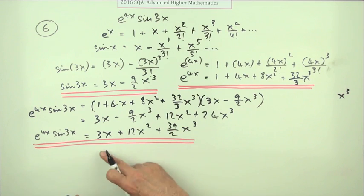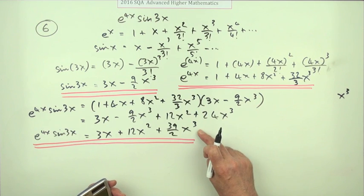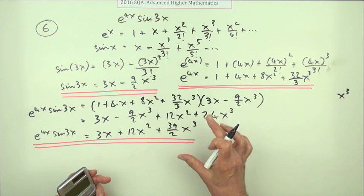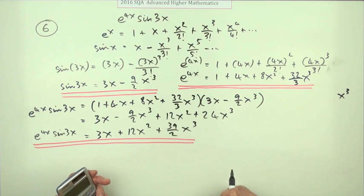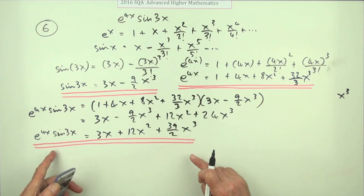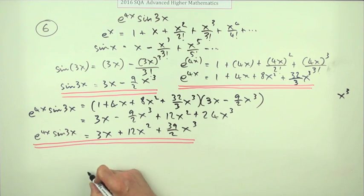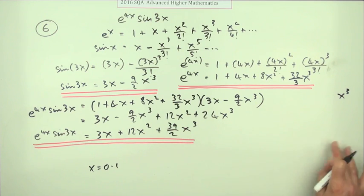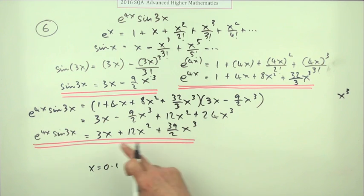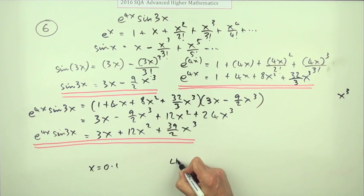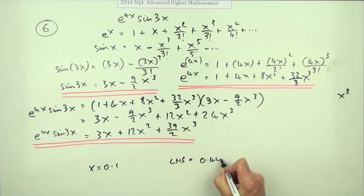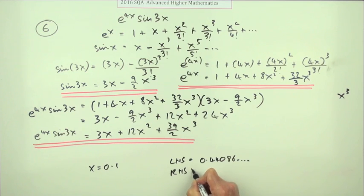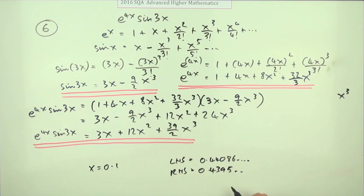You can actually do a little check if you have time. Since we're only going up to x cubed, this is only approximately correct, but it'll be closer the smaller x is - well under 1. Try x equals 0.1: the higher-power terms become insignificant. Typing into the left hand side gives 0.44086, and typing into the right hand side gives 0.4395 - that's not bad at all, so it's probably correct. Of course, you don't need to do that.